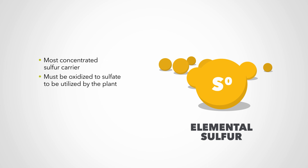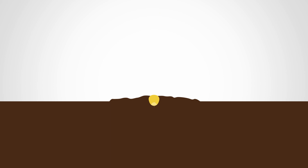Elemental sulfur sources are the most concentrated sulfur carrier but must be oxidized to sulfate before the plant can utilize it. Since the elemental sulfur form needs to be oxidized to become plant available, fall applications are an option.